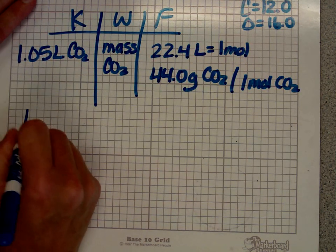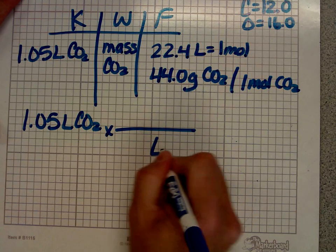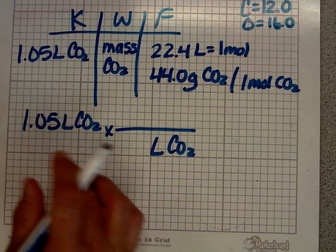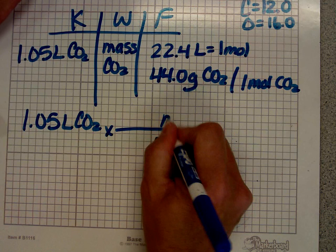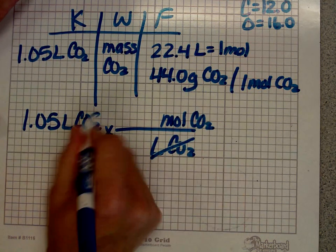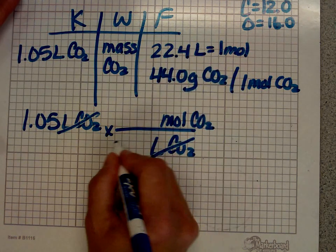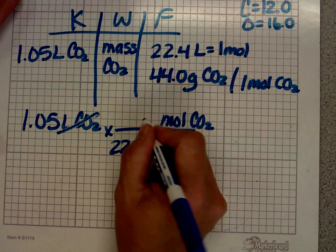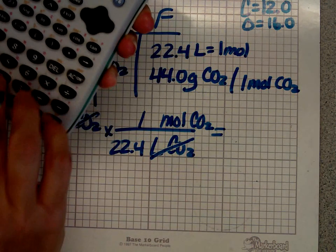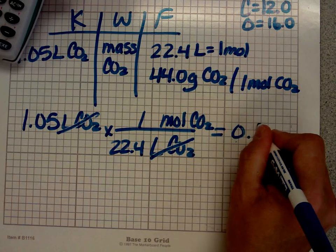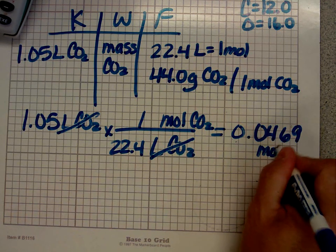We always start with what we know: 1.05 liters of carbon dioxide. I want to get rid of liters and get to grams. There's no direct way from liters to grams; I have to go through moles. So I'm going to move to moles first. 22.4 goes next to the L, 1 goes next to the mole. I have 1.05 times 1 divided by 22.4, which gives me 0.04. With three sig figs, that's 0.0469 moles of carbon dioxide.